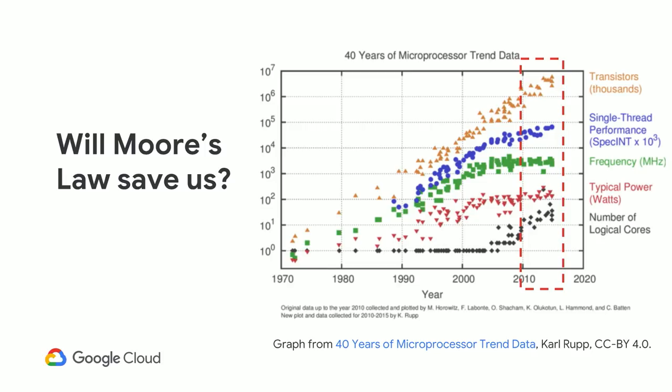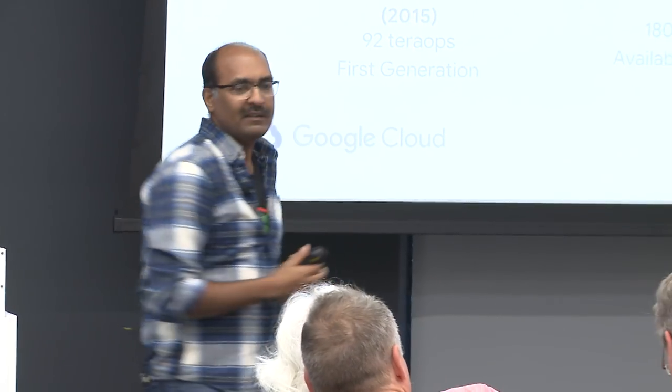Jeff Dean, the lead of AI at Google, did a back-of-the-envelope calculation in 2014 and said: if everybody speaks into their phone for three minutes, we'll exhaust all available computing resources on the planet. So what do you do? You develop a TPU. Moore's law was supposed to save us, but it turns out pretty much everything has started plateauing around 2010. Moore's law is not going to save us, so forget about general-purpose processors — if you have a need for something specific, you go develop it.